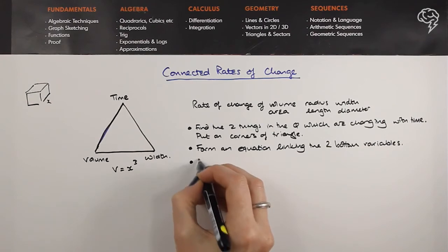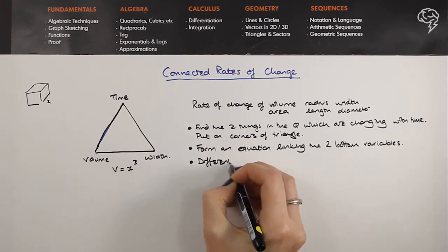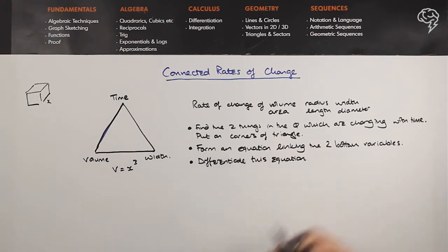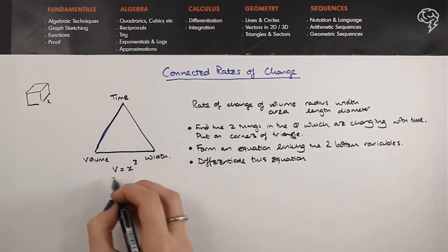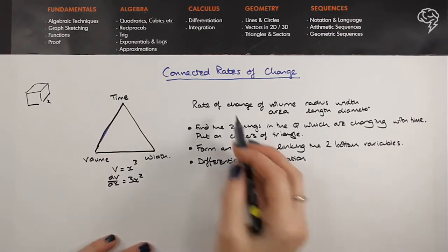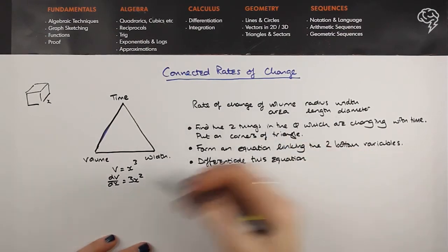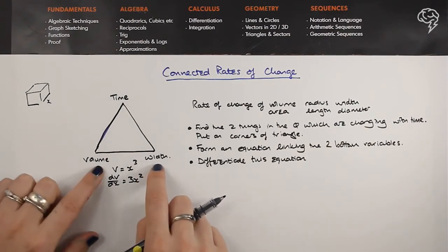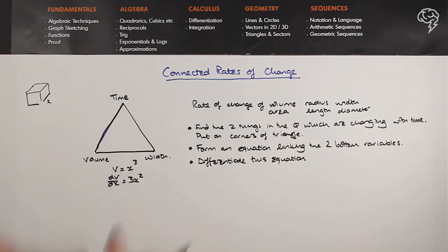And then differentiate that equation. So all this can be done almost before you've read the question, to be honest. dV/dx is 3x squared in my case. All this is - you have a quick glance at the question, you work out what two things are changing as time goes along and you put them at the bottom, and then you join them up, either they tell you or you work it out, and then you differentiate.